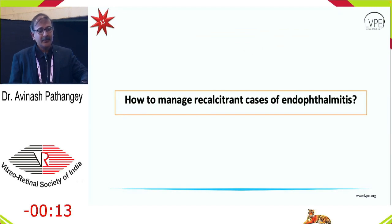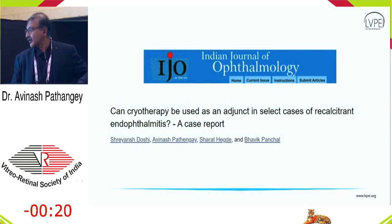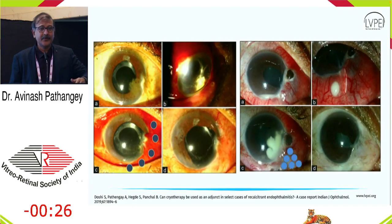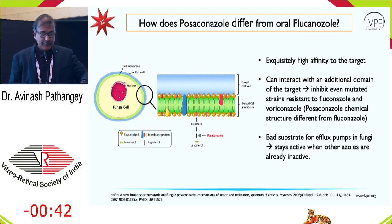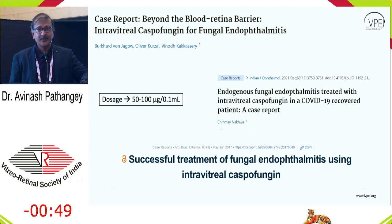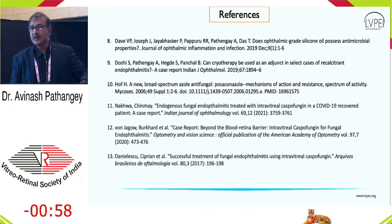For recalcitrant cases not responding to multiple injections, we have published on the possibility of using cryo to manage the infections and reduce recurrent inflammation. On the next frontiers: we can move from voriconazole to posaconazole, with good success during the COVID pandemic. Additionally, intravitreal caspofungin at concentrations of around 50 to 100 micrograms can be considered in these settings.